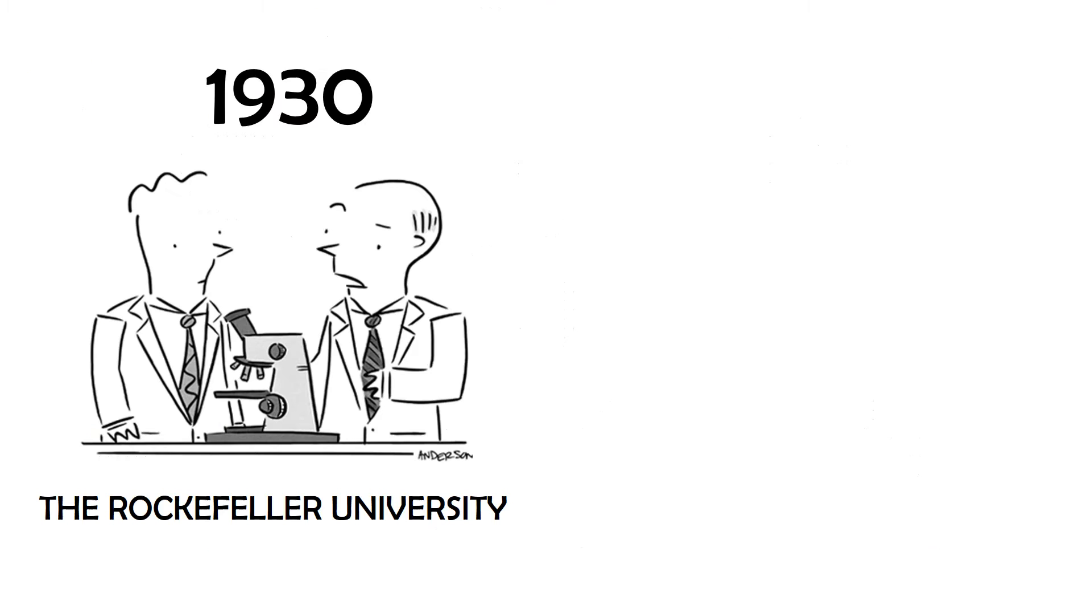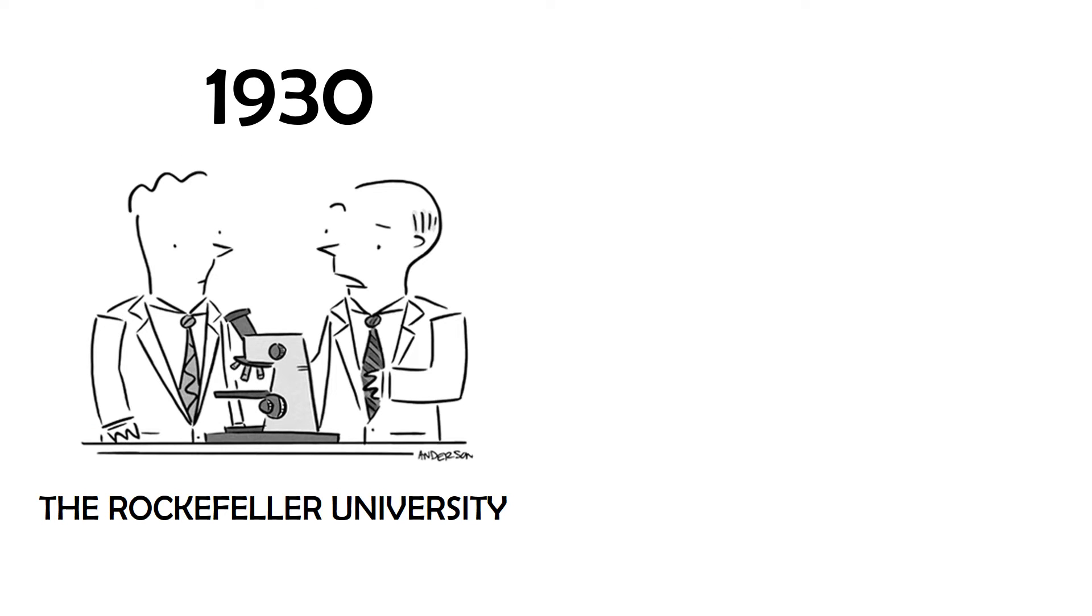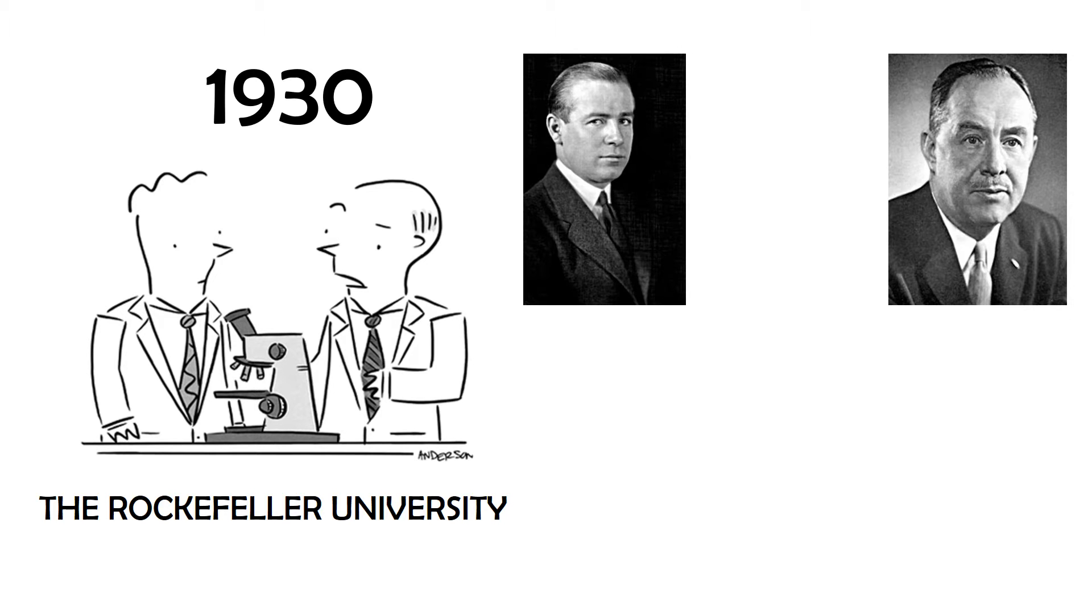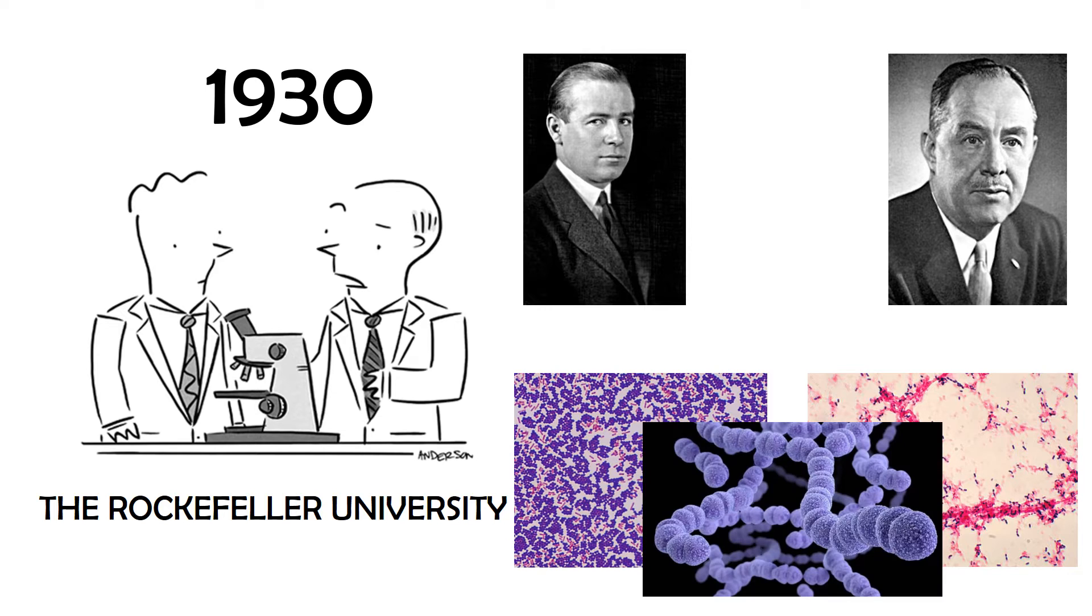So what exactly is CRP? CRP was first discovered back in 1930 by scientists William S. Tillett and Thomas Francis. They were studying the body's immune response to pneumococcus, a bacterium which causes infections like pneumonia, bronchitis, and meningitis.